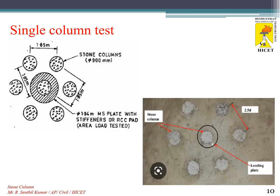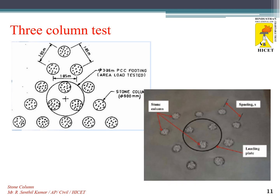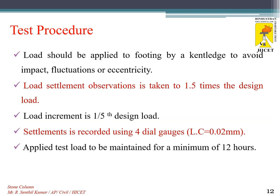This picture shows the single stone column test, where seven columns are constructed and a loading plate is placed on the center column. The spacing between two columns is 2.5 times the diameter, or 1.85 meters. The next picture shows the three-column test, where 15 columns are constructed and the loading plate is placed over the center three columns.